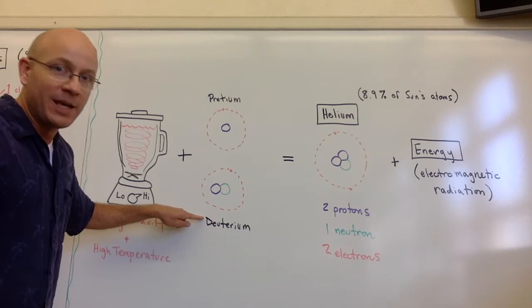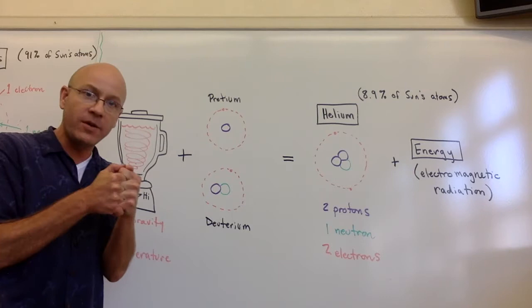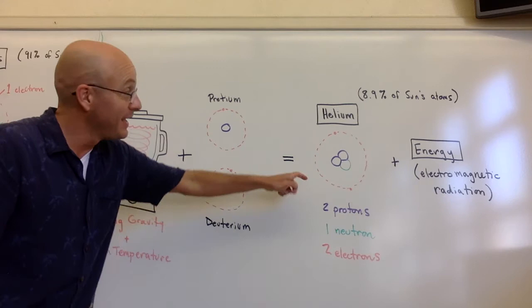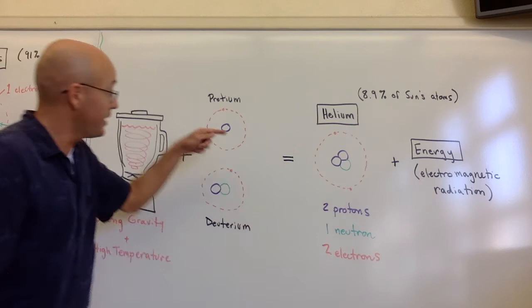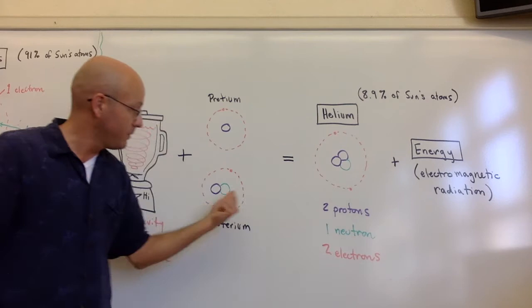And it causes those two to become one. They fuse together. Two individual atoms will then become one atom. This atom that it becomes has two protons, right? One proton, one proton. So there you have two. It has one neutron, which came from here, the deuterium. And then it has the two electrons.